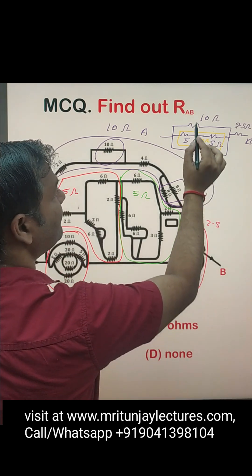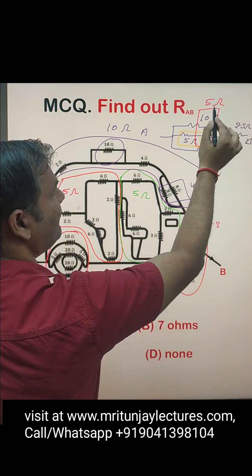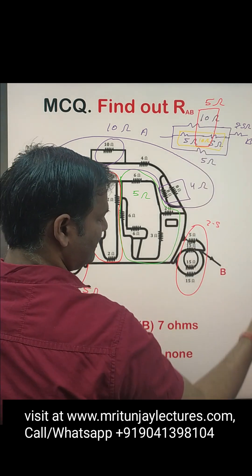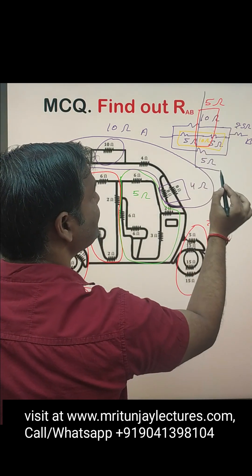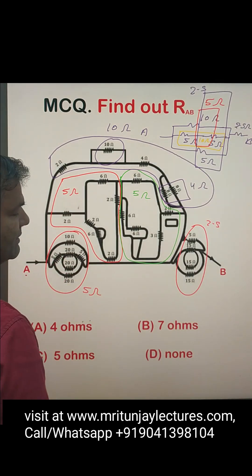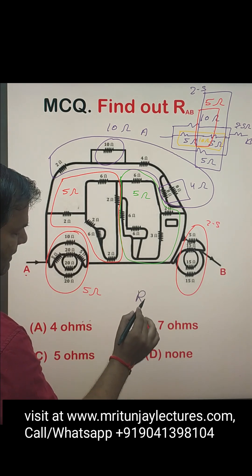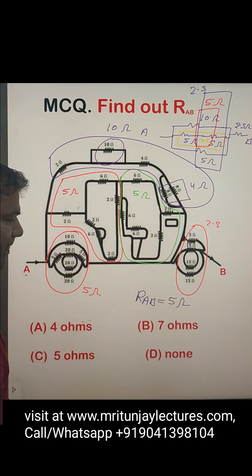Then 10Ω and 10Ω in parallel gives 5Ω. Then 5Ω and 5Ω in parallel gives 2.5Ω. And 2.5Ω + 2.5Ω + 2.5Ω... wait — 2.5Ω in series gives a total. So R_ab = 5Ω. Option C is the correct answer.